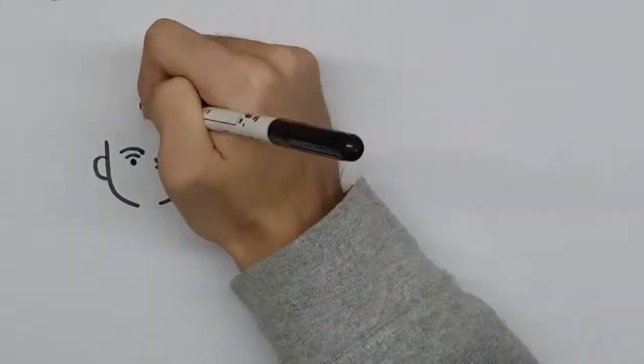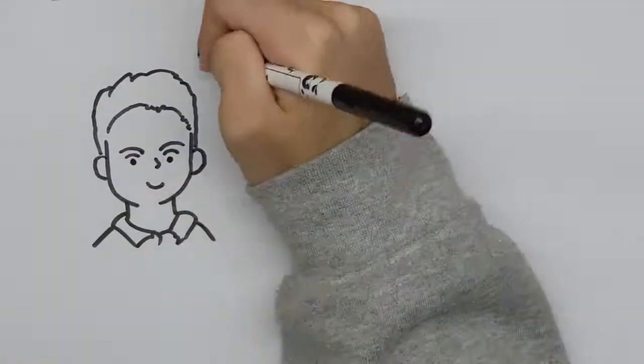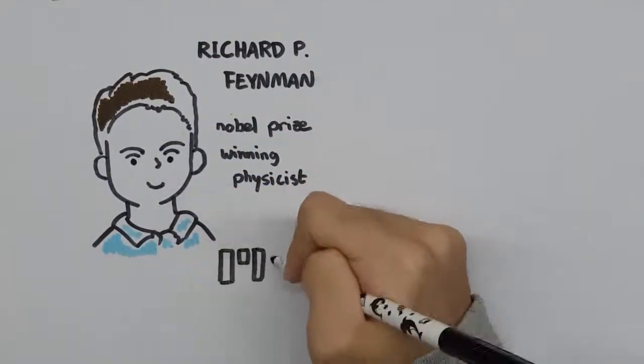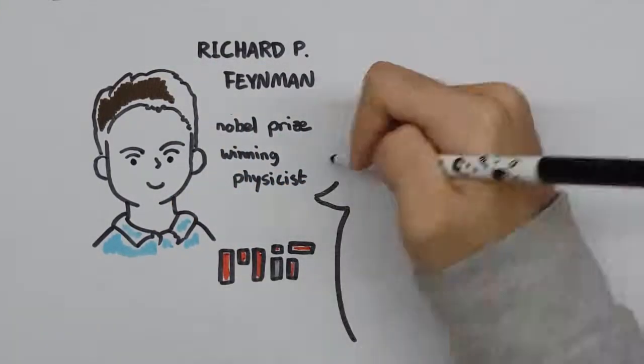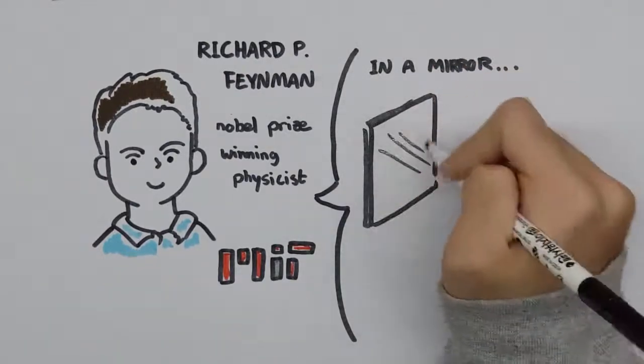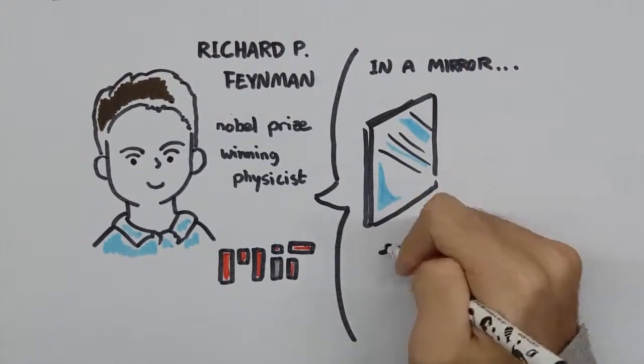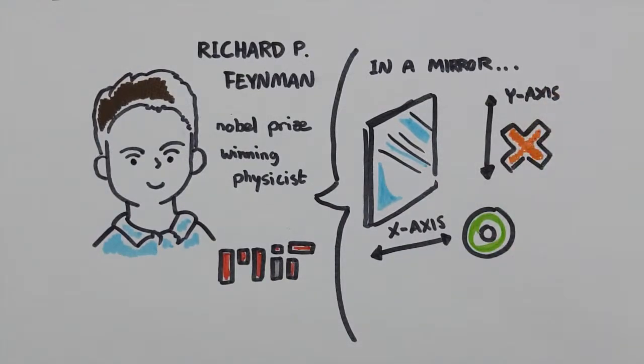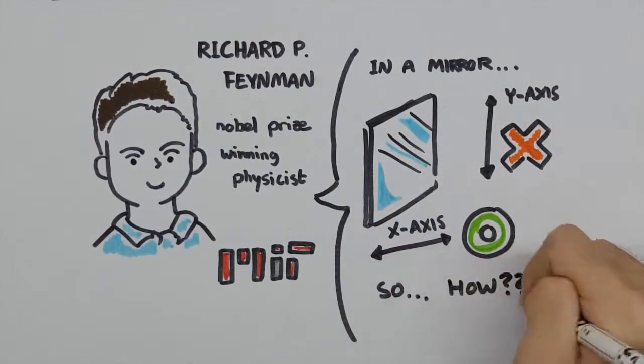There's an interesting question that Richard Feynman, the Nobel Prize-winning physicist, learned about at his MIT fraternity. In a mirror, reflected images are flipped horizontally, left to right, but not vertically, up and down. So how do mirrors know to flip things horizontally, but not vertically?